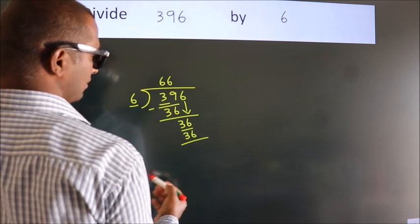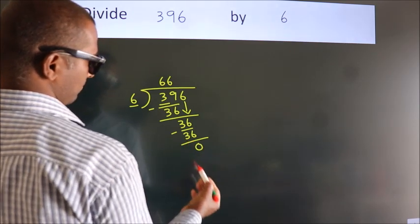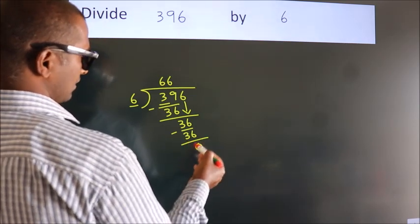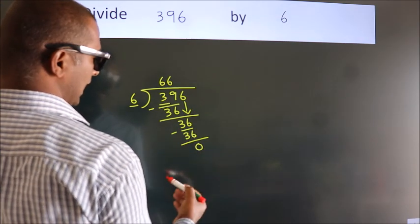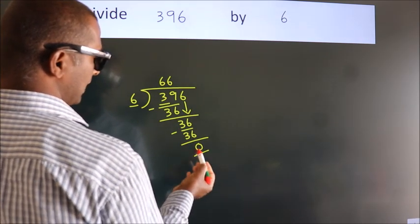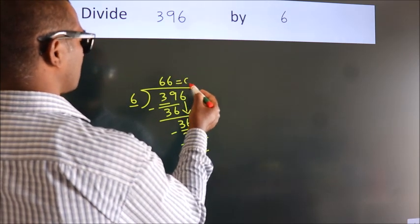Now, we subtract, we get 0. After this, no more numbers to bring it down and we got remainder 0. So, this is our quotient.